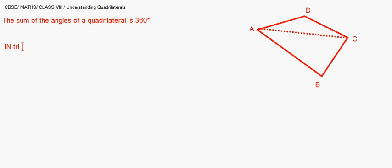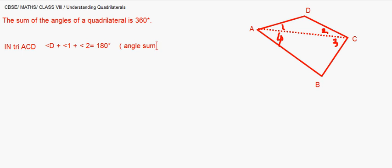Let us label the angles: angle 1 and angle 2 are in triangle ACD, and angles 3 and 4 are in triangle ABC. In triangle ACD, angle D + angle 1 + angle 2 = 180° by the angle sum property of a triangle. Similarly, in triangle ABC, angle B + angle 4 + angle 3 = 180° for the same reason.